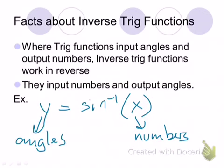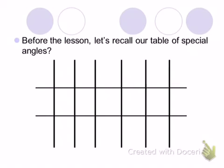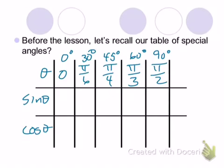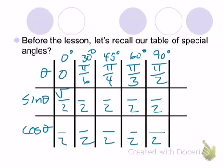As a reminder, let's look at our table of special values. What are our special angles? Zero degrees, which is zero radians. 30 degrees is pi over 6. 45 degrees is pi over 4. 60 degrees is pi over 3. And 90 degrees is pi over 2. Those are our angles, and here we'll take the sine of theta and the cosine of theta. Every denominator is 2, and every numerator has a square root.